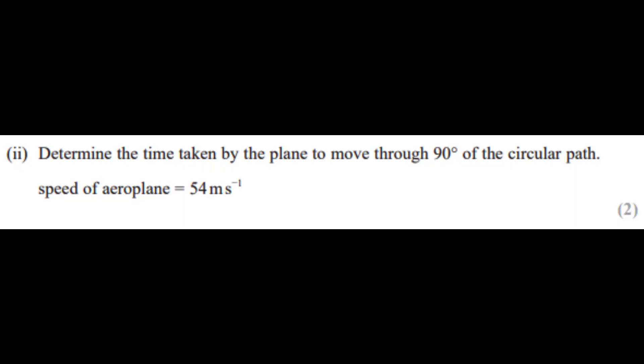Okay, so I have the next question right here: determine the time taken by the plane to move through 90 degrees of the circular path. The circular path is basically 360 degrees, so you just move 90 degrees. The speed of the airplane is given as 54 meters per second.